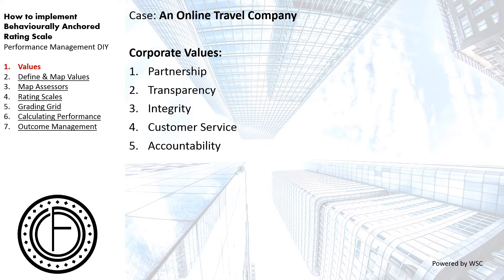For this online travel company, the values include transparency and integrity. You can look at transparency and integrity and say, aren't they the same thing? But within the context of an organization, they could mean different things. Customer service is also one of their values, which makes sense for an online travel company. Accountability is another value. In all, this company has five values.